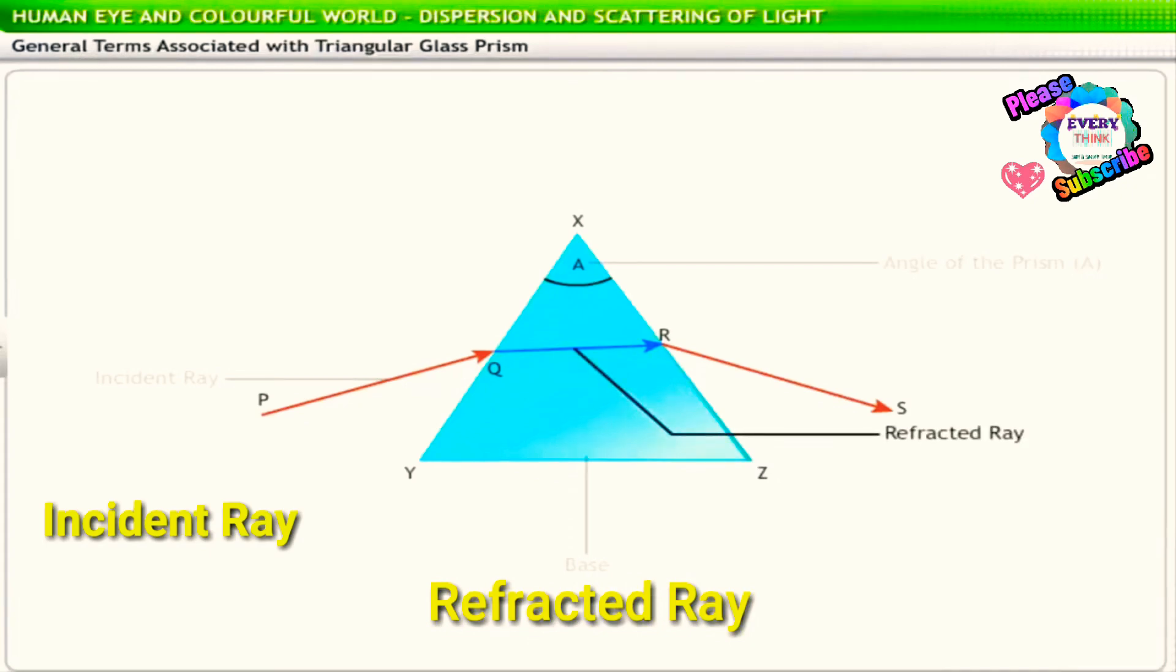The ray that deviates at the point of incidence due to a change in the medium is the refracted ray. In this case, the refracted ray is the ray that travels inside the prism between the two refracting surfaces. Thus, QR is the refracted ray.